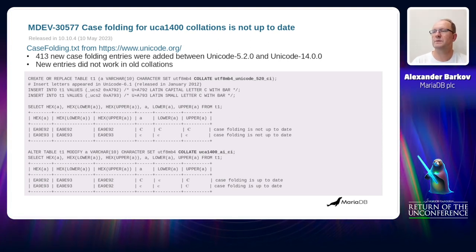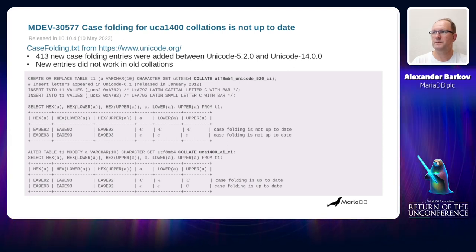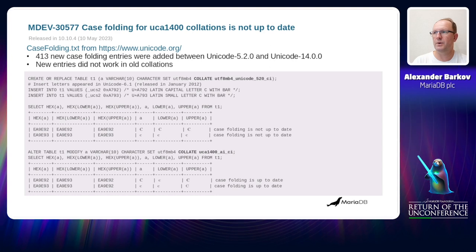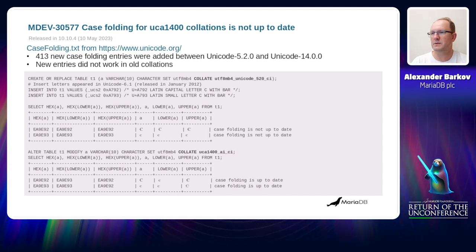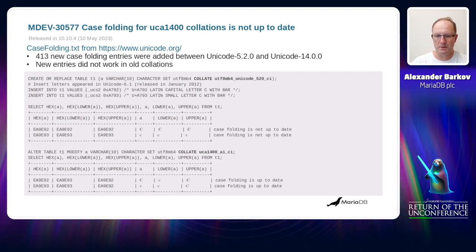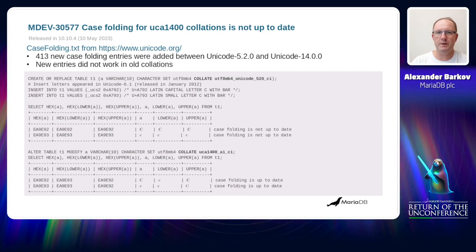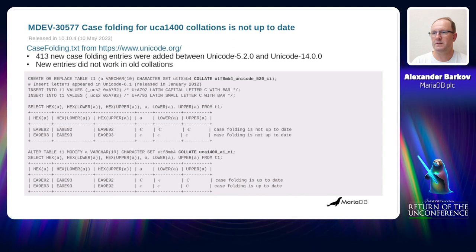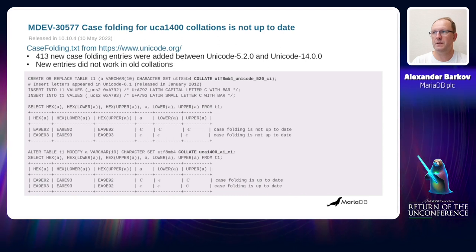Another task which was implemented immediately after the UCA1400 collations was updating case folding data from the latest Unicode files. If we compare CaseFolding.txt between Unicode 5.2.0 and Unicode 10.0.0, we can see that about 400 new entries were added. Our old collations didn't support all of them because we didn't update this data since those collations were added, for backward compatibility purposes. The new Unicode 14-based collations take all those new case folding pairs into account, and this slide demonstrates that.